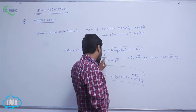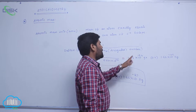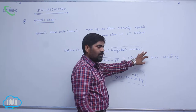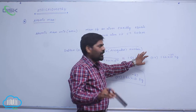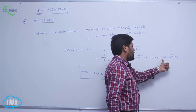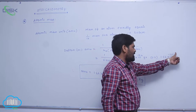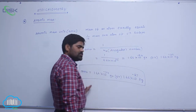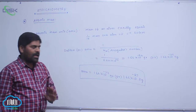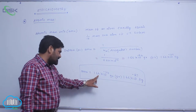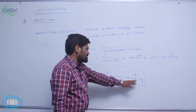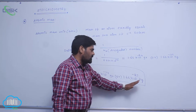1.66 into 1 by Avogadro number — it becomes 1.66 into 10 power minus 24. It is in grams, then in kg it is 1.66 into 10 power minus 27 kg. So the final conclusion: 1 amu equals 1.66 into 10 power minus 24 grams or 1.66 into 10 power minus 27 kg.